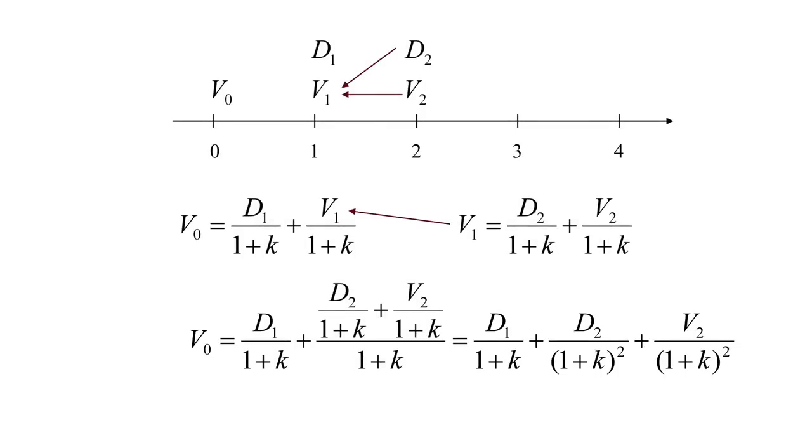So in some ways we've made our chore a little easier here, but we've also made it just as complex. Instead of forecasting the value of the stock at time one, now we must forecast the value of the stock at time two. But of course we can keep making the same assumption here, that the person that buys the stock at time two is willing to pay the same thing in terms of how they model the value of that stock.